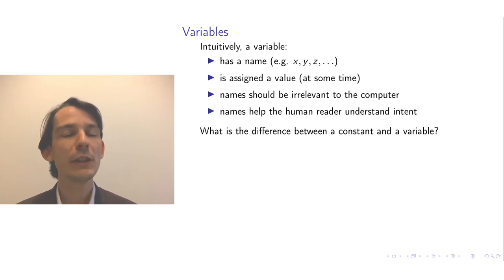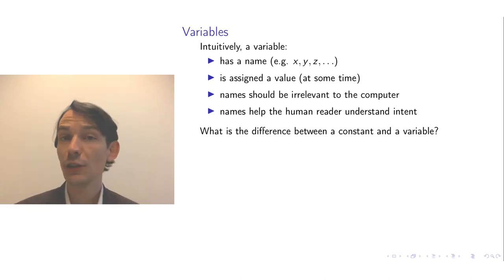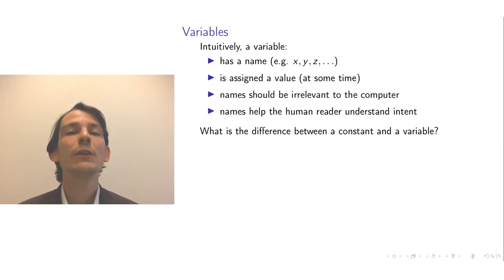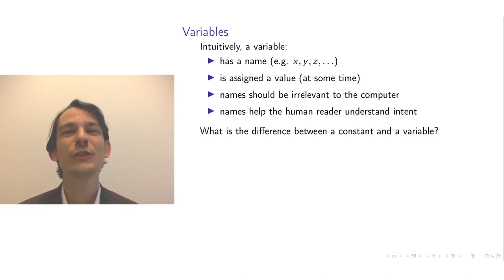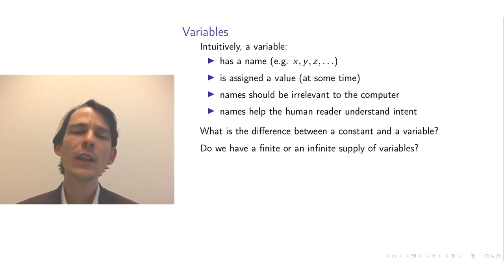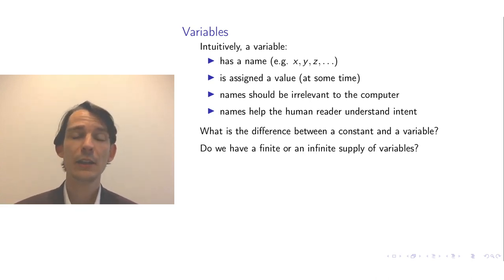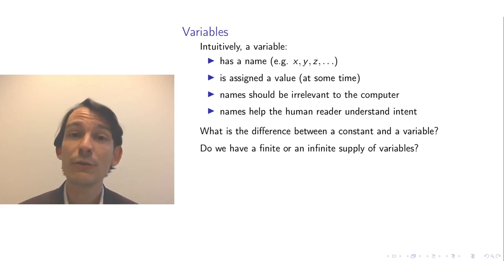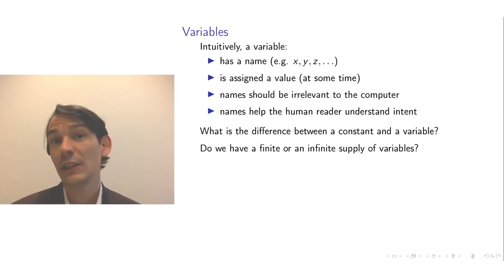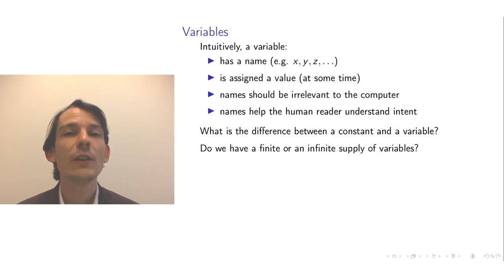You could also ask yourself: what is the difference between variables and constants? Constants also have a name and a value. Well, you could argue that the name already says it — the variable is variable over time, so its value is variable over time, while the constant's value is constant over time. Another question is whether we have a finite or infinitely many variables. Some languages only have finitely many, while others allow arbitrary strings as variable names that can become arbitrarily long — so you could almost argue there are infinitely many variables.